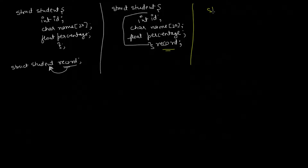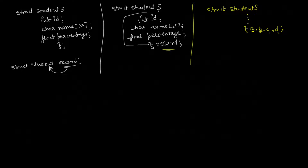We can even declare multiple variables. After the struct student definition and its closing brace, I can write different variables — for example a, b, c, d. That means variable a is of type student, b is of type student, and c and d are all variables of type student. Here 'student' is the name of the structure, and a, b, c, d and 'record' are variables of that data type.